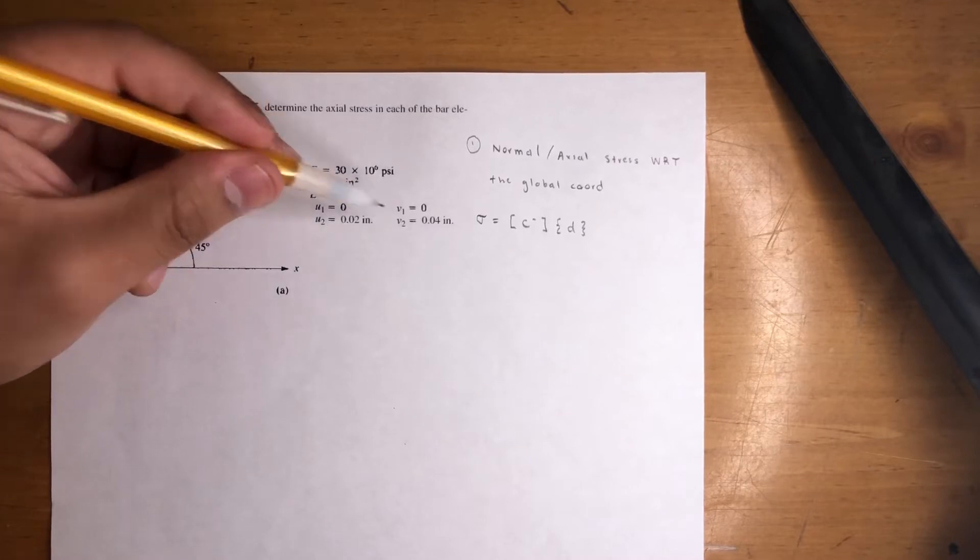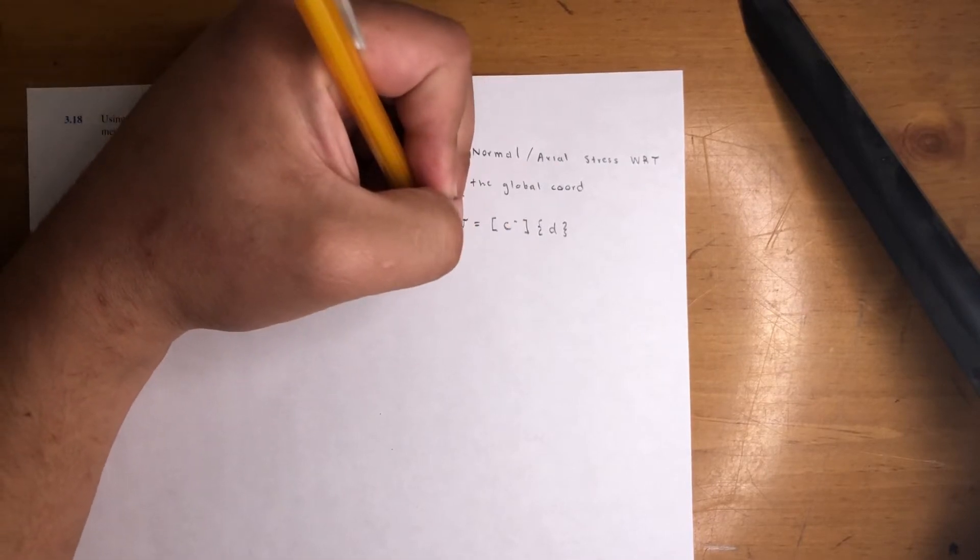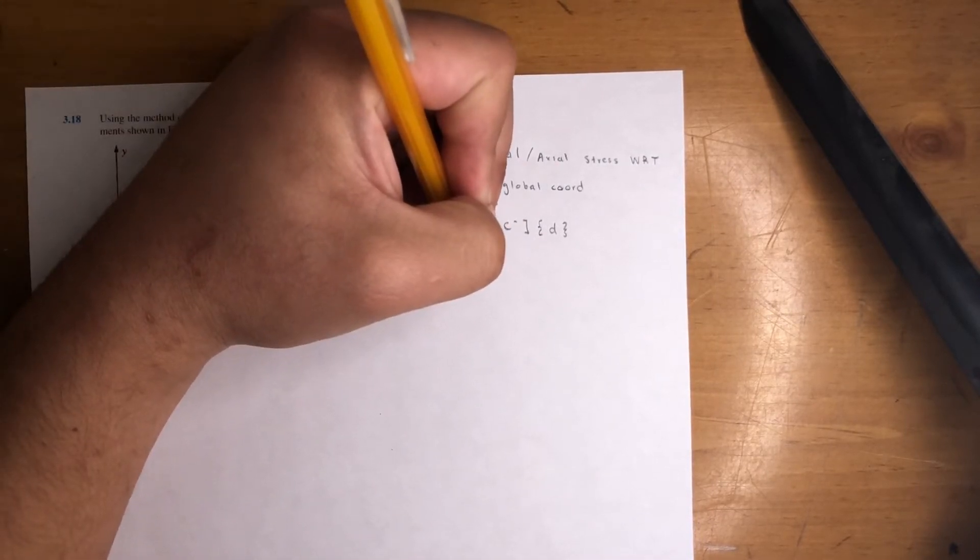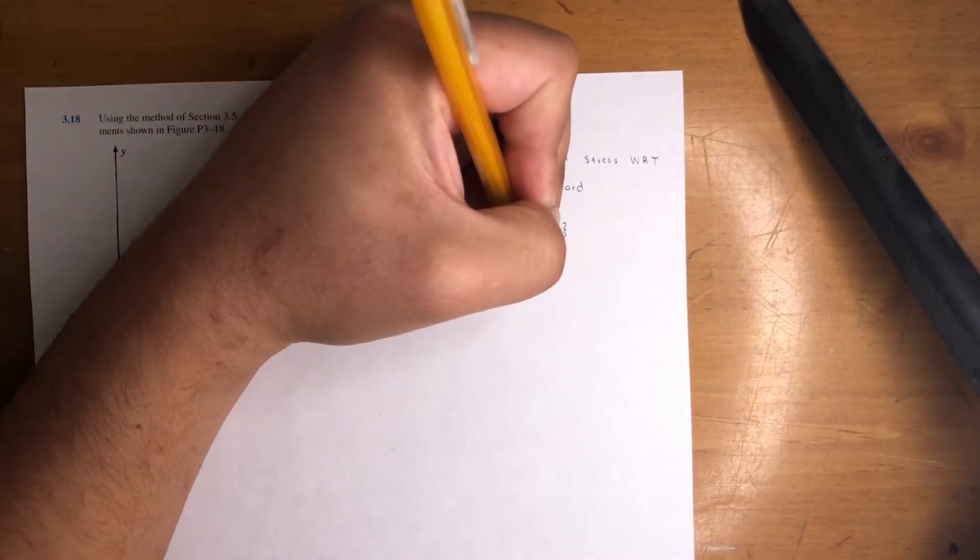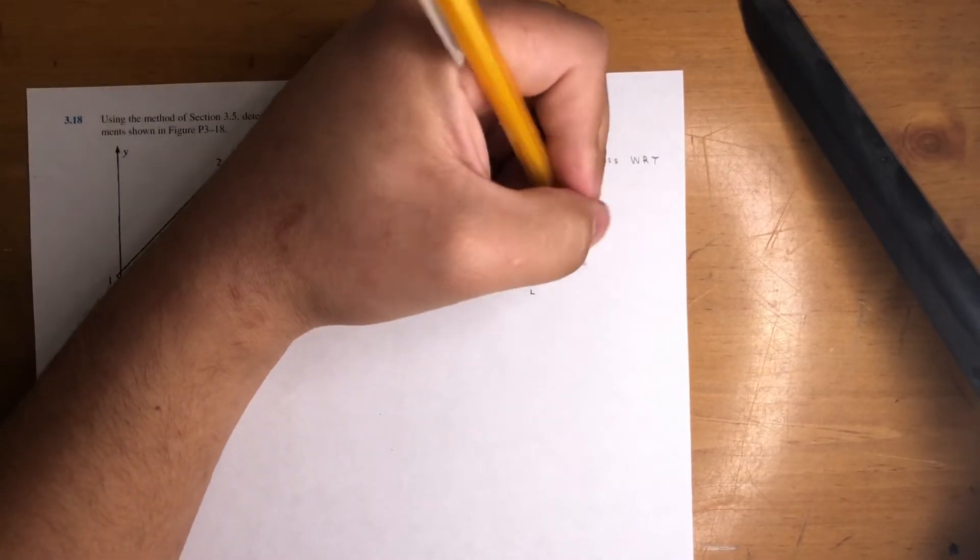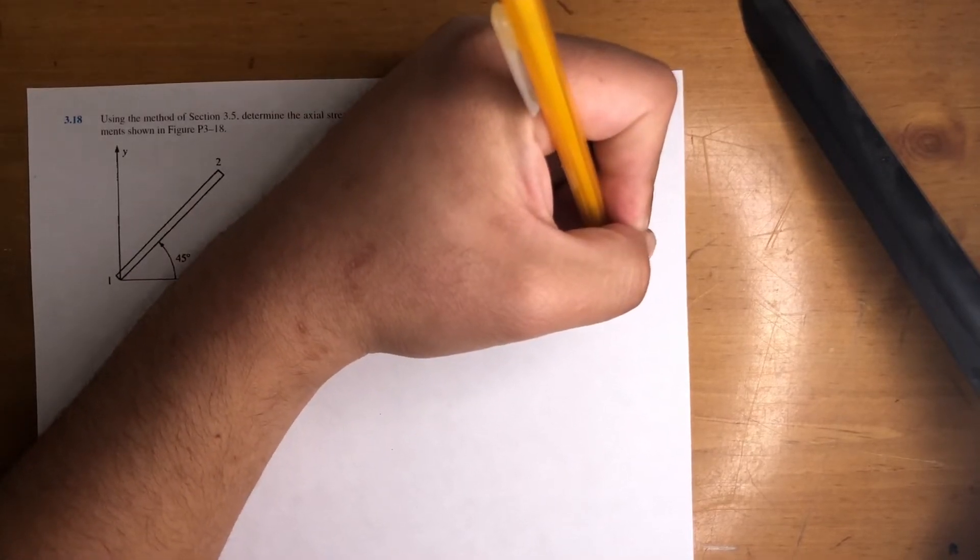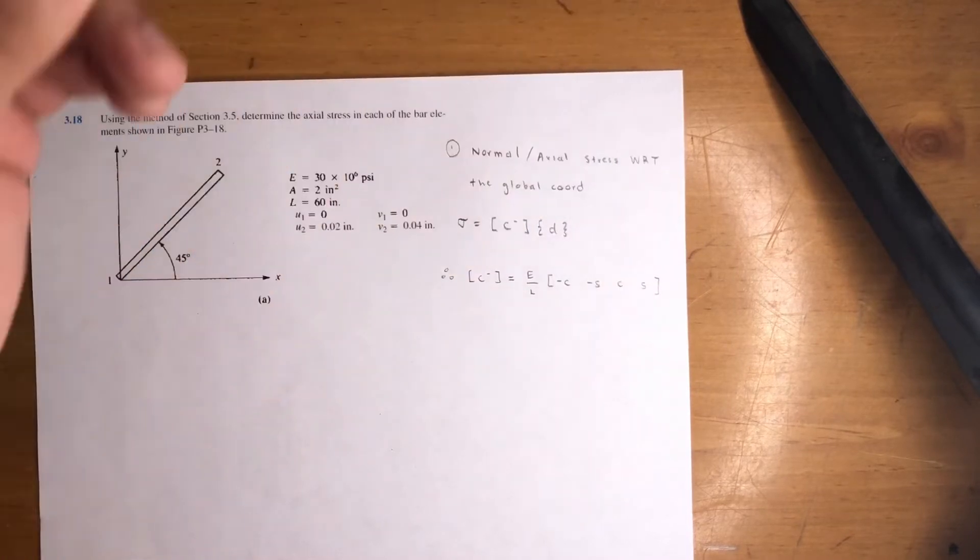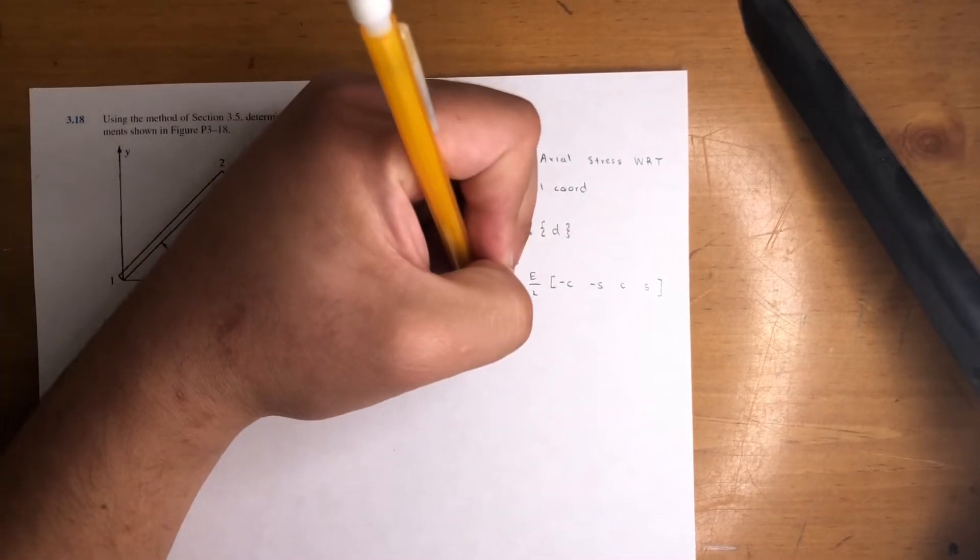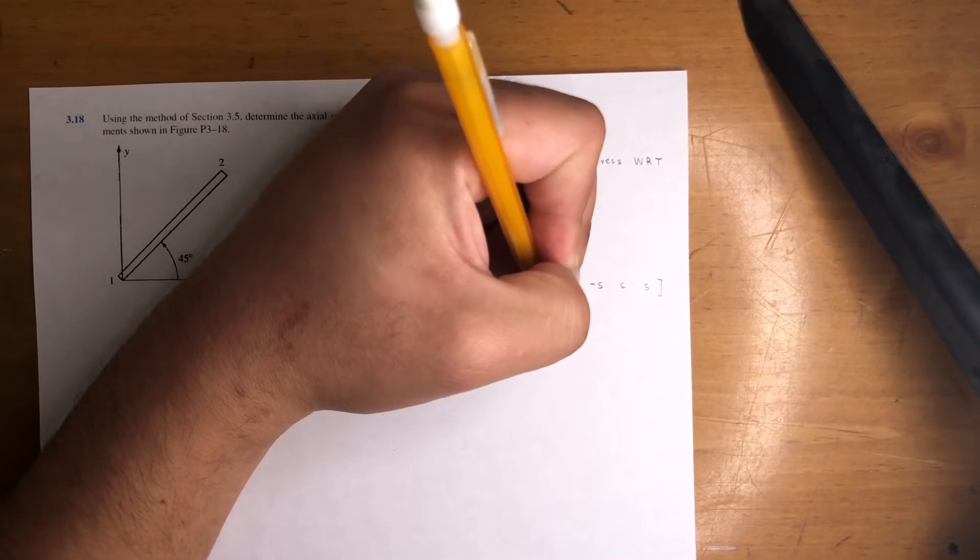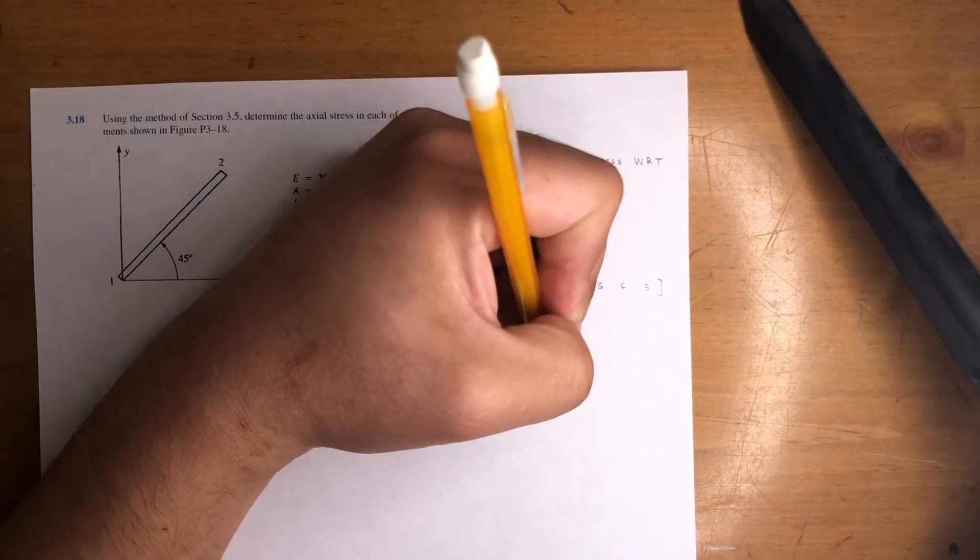So they give us a displacement vector: U1, V1, U2, and V2. And that matrix, the C-minus, is E over L—not area because you're finding stress, so it's per unit area. And that is just negative cosine, negative sine, cosine, and sine of your angle. In this case, cosine and sine of the angle is going to be √2/2, and same thing for sine, √2/2.